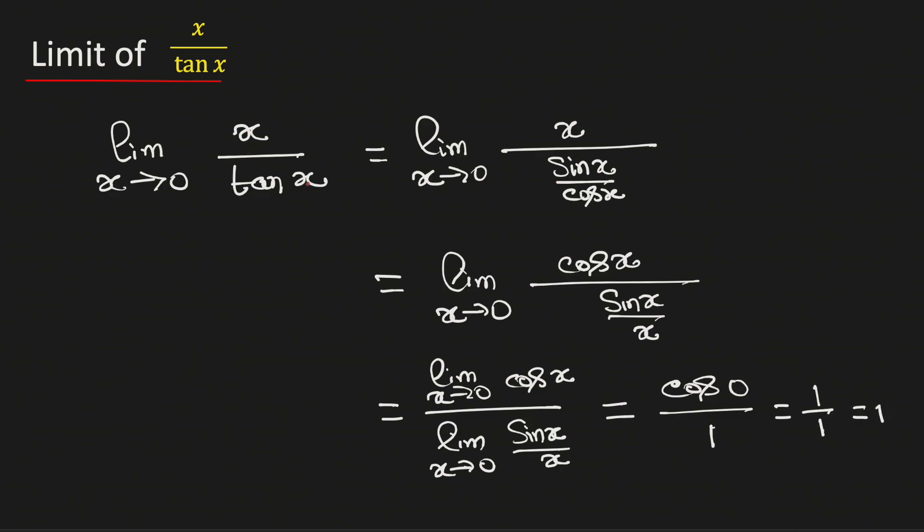Therefore, the limit of x by tan x as x approaches 0 is equal to 1. And this is our final answer.